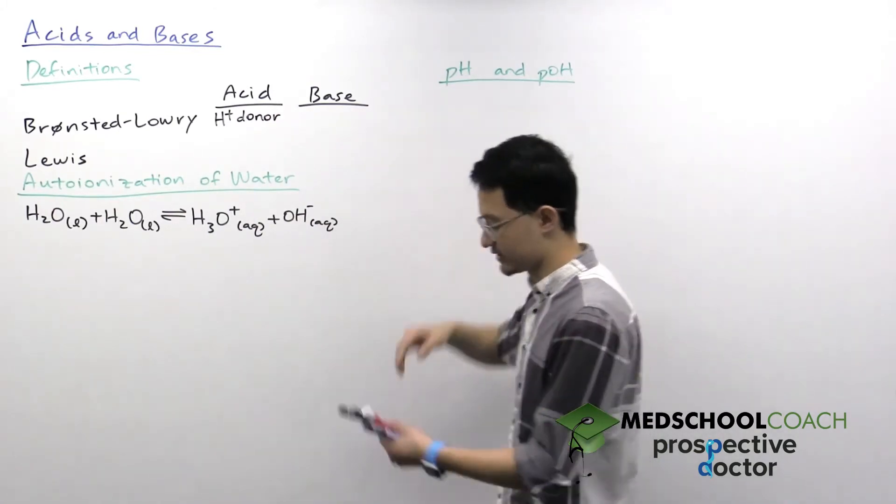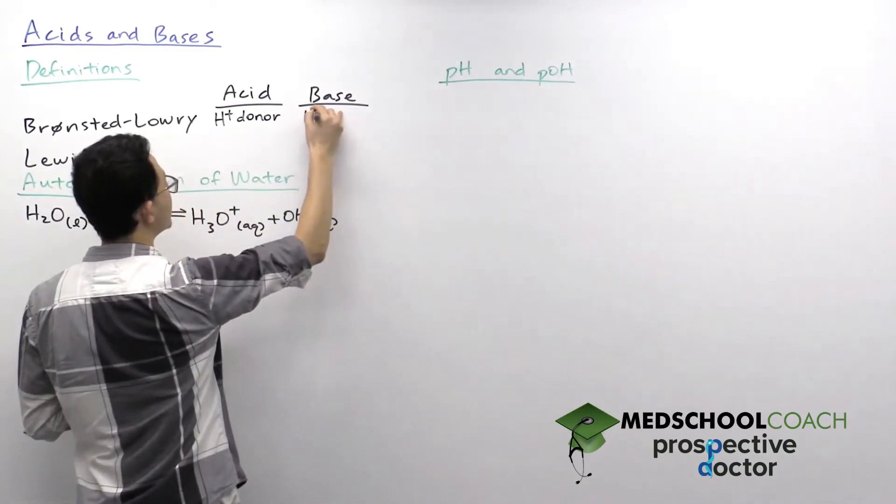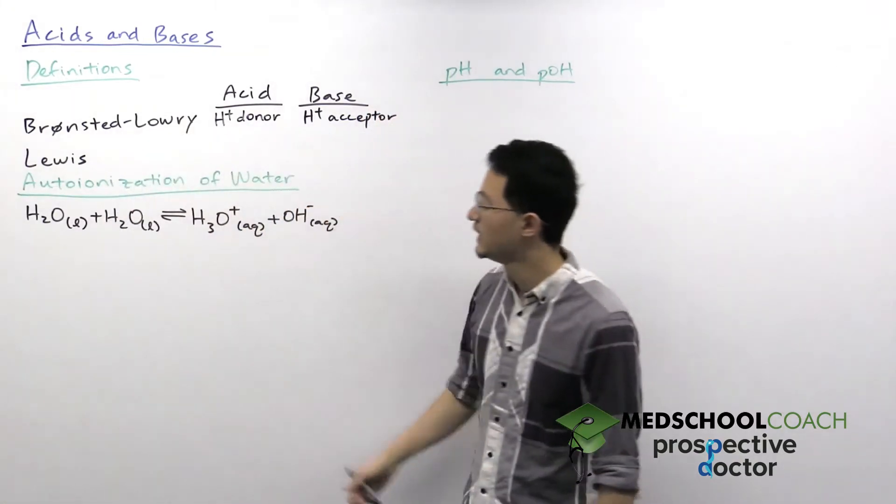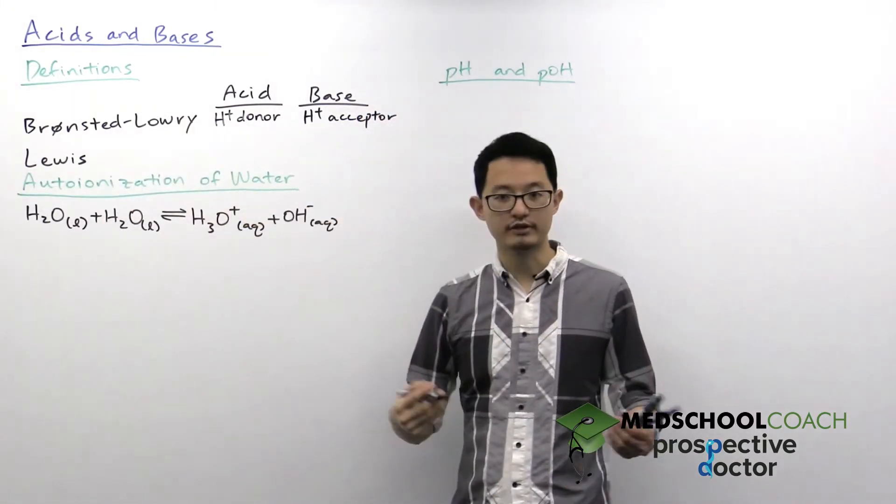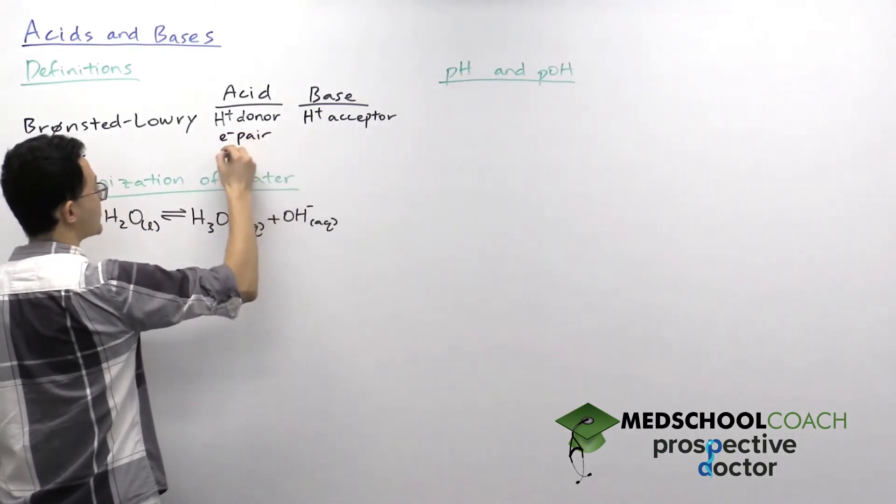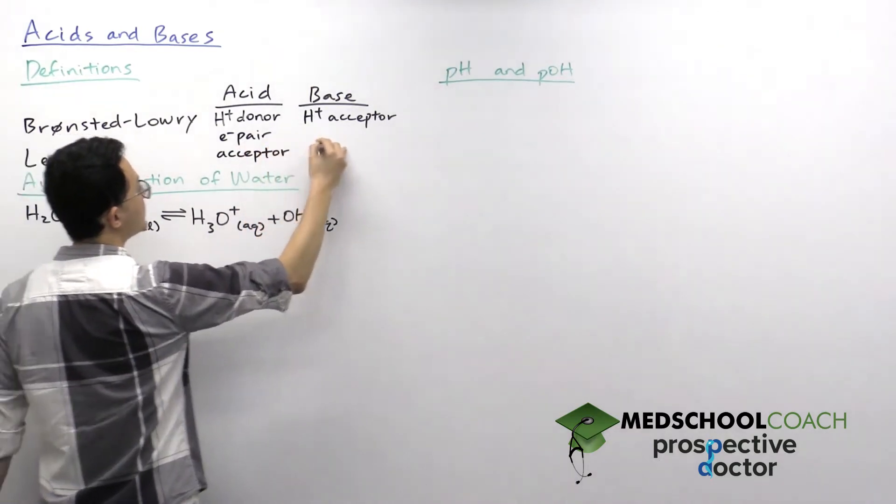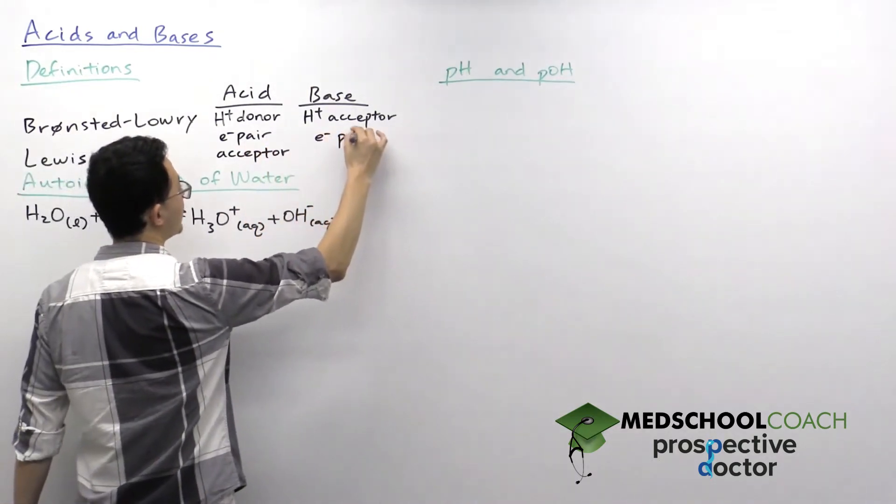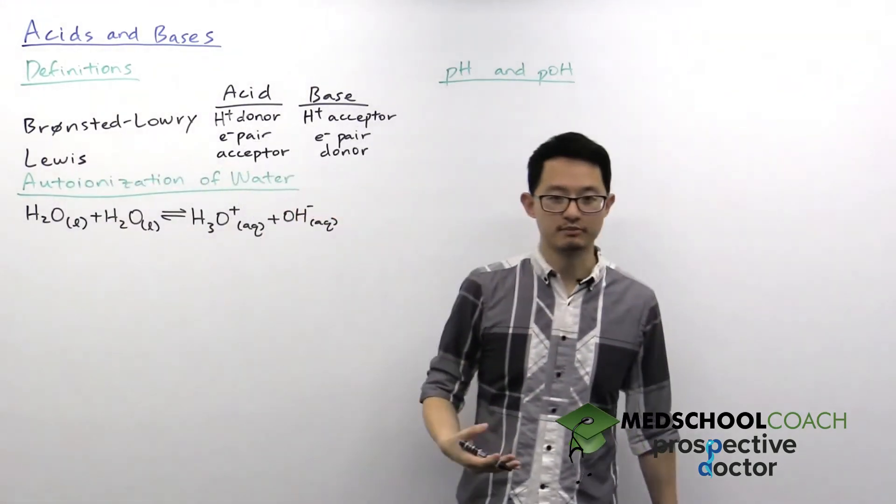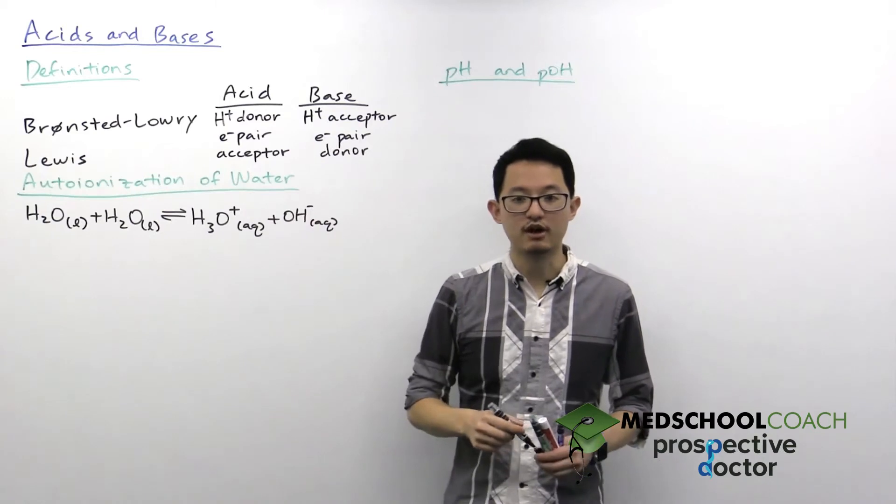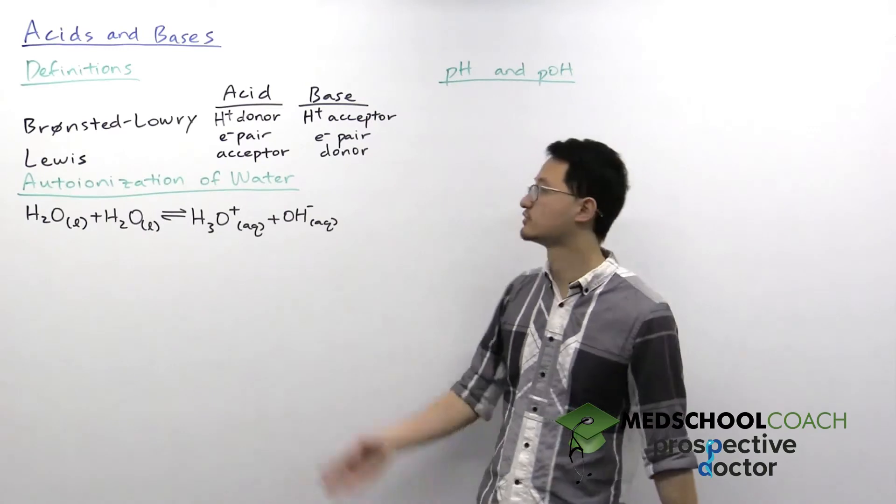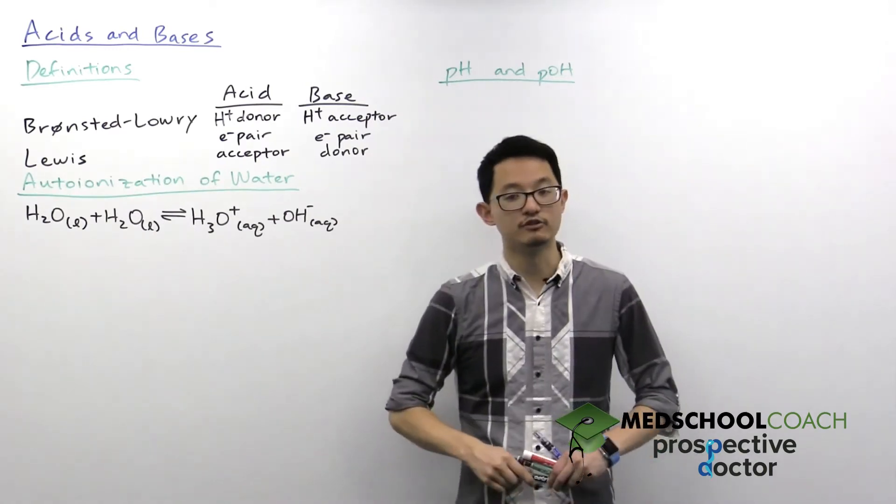A Bronsted-Lowry base is essentially the opposite, so it is a proton acceptor, a molecule that will accept a hydrogen ion. For the Lewis definition, we're looking at electrons. So a Lewis acid is an electron pair acceptor, and a Lewis base is an electron pair donor. You probably have heard about these terms before. We use them in organic chemistry a lot. And you probably also recall that Lewis acids are also called electrophiles and Lewis bases are also called nucleophiles. That's absolutely correct.